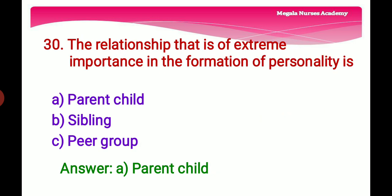Thirtieth question: The relationship of extreme importance in the formation of personality — Option A: Parent-child, a unique bond that nourishes holistic growth and development of a child. Option B: Sibling, children of the same parents. Option C: Peer group, a group of people of approximately the same age. The right answer is Option A, parent-child.